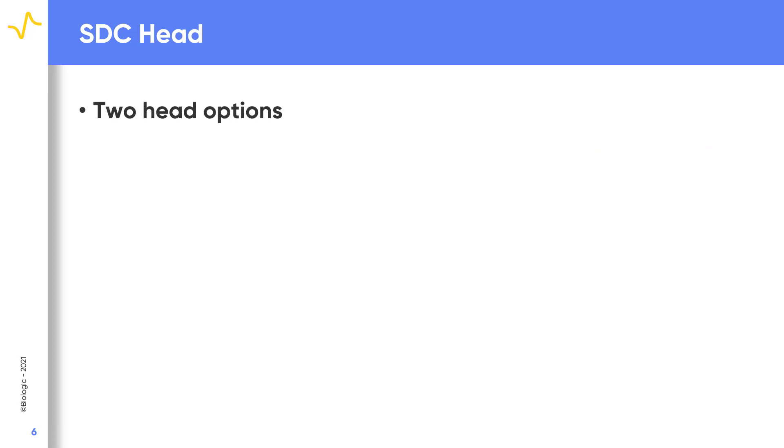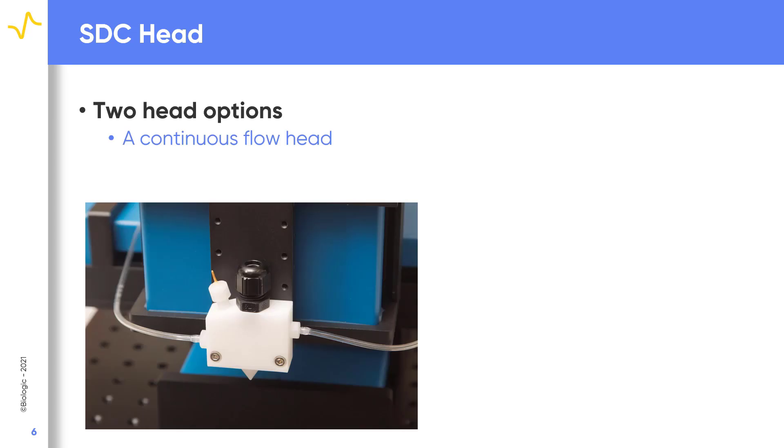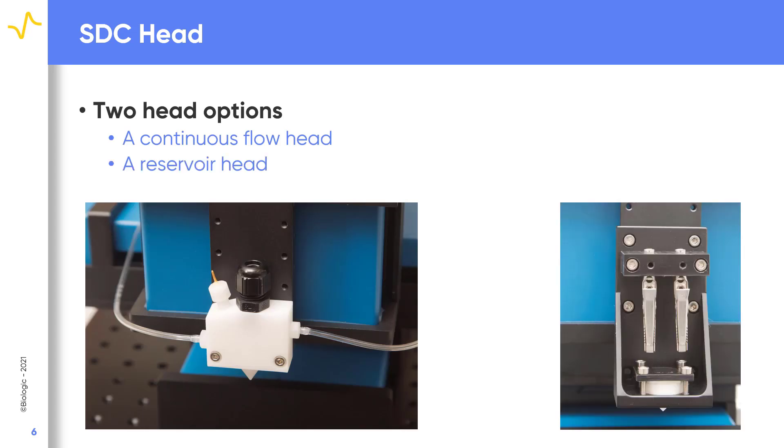When performing SDC measurements, researchers have two head options which will be discussed in the following slides. These are the continuous flow head and the reservoir head.